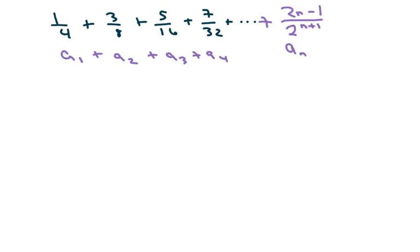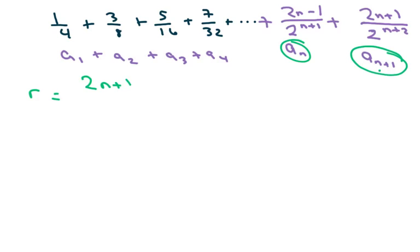Alright, I'm going to go ahead and do the ratio test. So my next term would be 2n plus 1 over, because I'm just plugging in n plus 1, over 2 to the little n plus 2. And remember, you do the ratio test, you're dividing your next term over your current term.